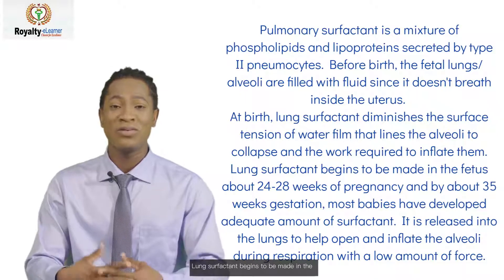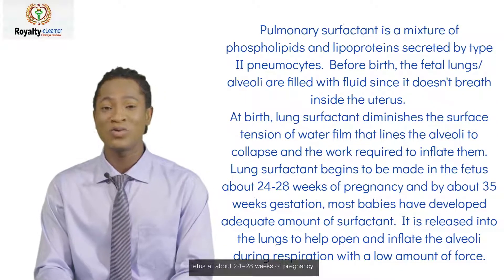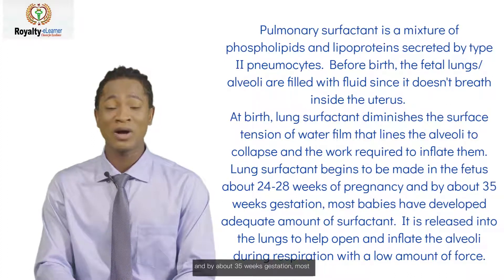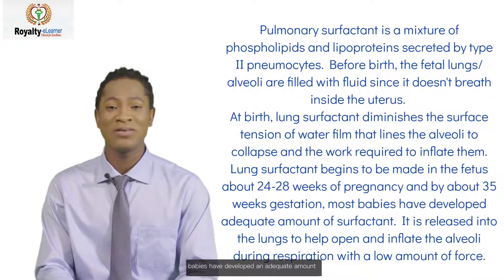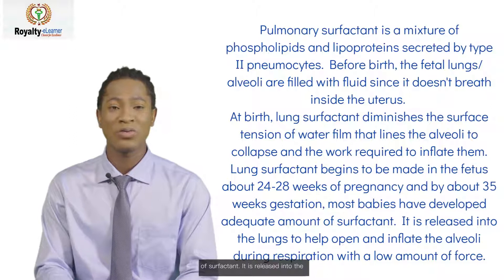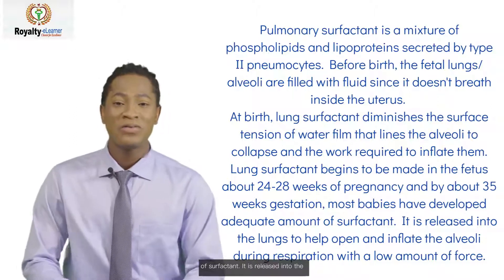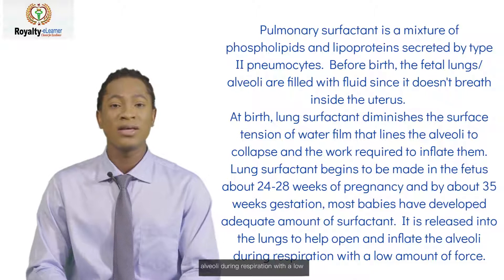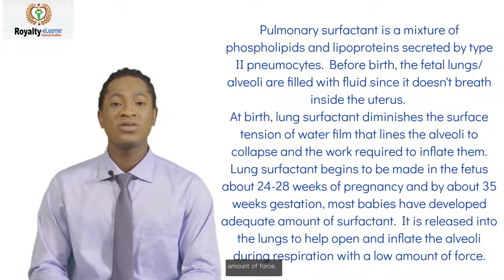Lung surfactant begins to be made in the fetus at about 24 to 28 weeks of pregnancy, and by about 35 weeks gestation, most babies have developed an adequate amount of surfactant. It is released into the lungs to help open and inflate the alveoli during respiration with a low amount of force.